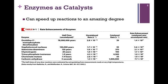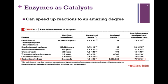Let's look at carbonic anhydrase — the enzyme responsible for maintaining the equilibrium between carbon dioxide and bicarbonate, a very important buffering system in the blood. The uncatalyzed rate is 0.13 per second; in other words, several seconds would have to pass before the reaction occurred. However, in the presence of the enzyme, the catalyzed rate is 1 million times per second. The chemical reaction occurs 1 million times in one second. That represents a rate enhancement of a trillion-fold — a truly amazing degree of rate enhancement.